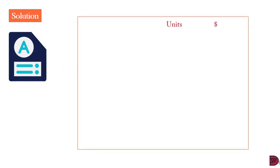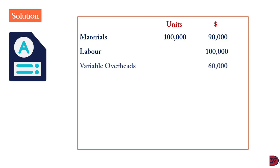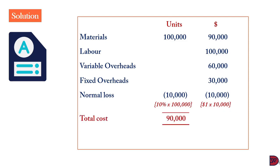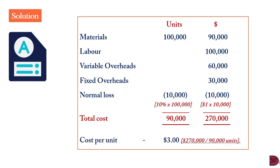For the solution: materials were 100,000 units inputted at a cost of $90,000; labor $100,000; variable overheads $60,000; fixed overheads $30,000. Normal loss is 10% of 100,000, which is 10,000 units with a scrap value of $1, giving $10,000. If there were no scrap value, this section would be zero. The total cost is $270,000 for 90,000 units, giving a cost per unit of $3 ($270,000 ÷ 90,000 units).